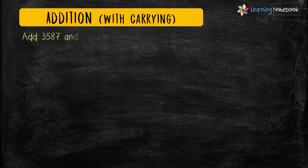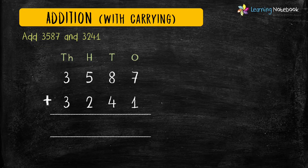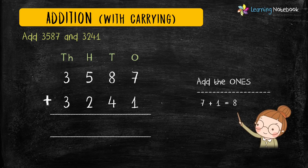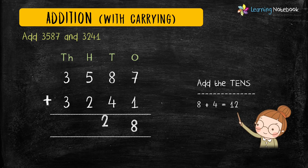The question is: add 3587 and 3241. First let's write these numbers in columns. Start adding from the ones place: 7 plus 1 equals 8. Now add the digits at tens place: 8 plus 4 equals 12. So carry 1 to the hundreds place and write 2 in the answer.